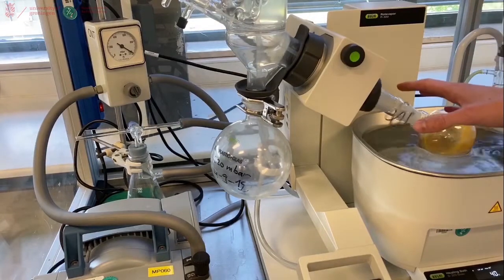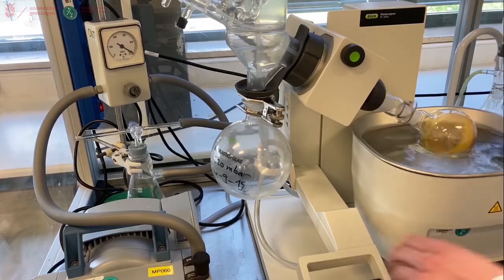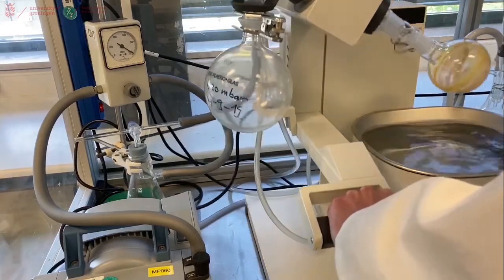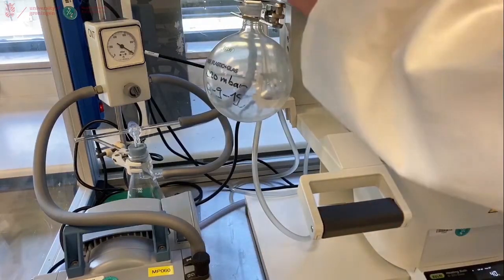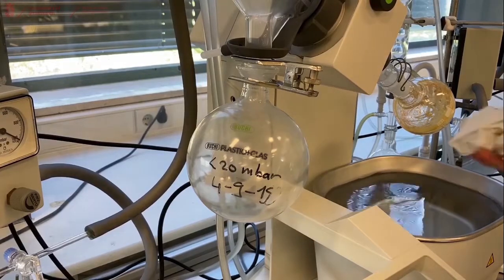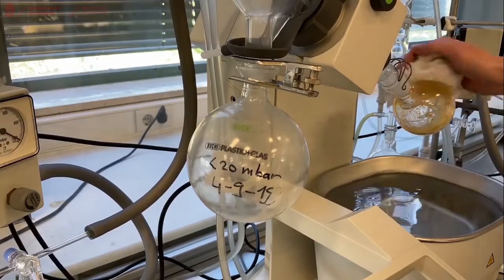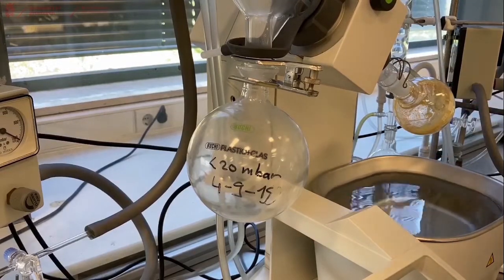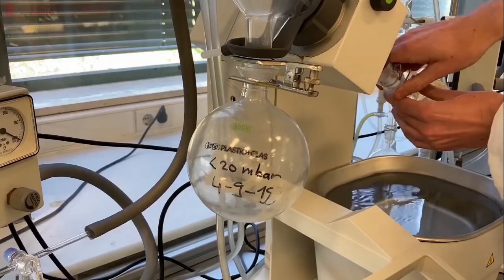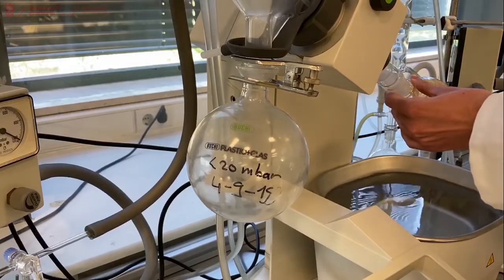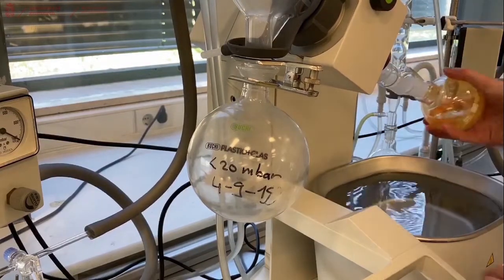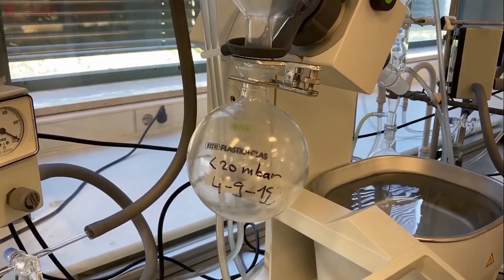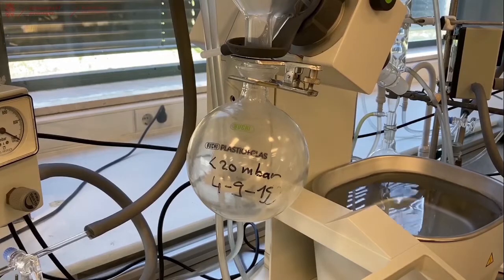Now that the system is back under atmospheric pressure, we can collect our flask by removing it from the water. Turn off the rotation. And dry the outside of your flask with a bit of paper. Now carefully remove the flask from the Rotary Evaporator. And place your stopper on the flask and take it back to your fuel mood. To continue on with the rest of your experiment.